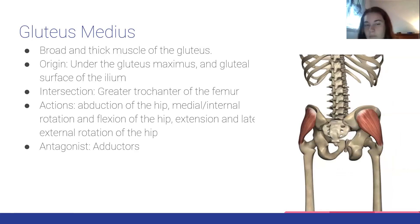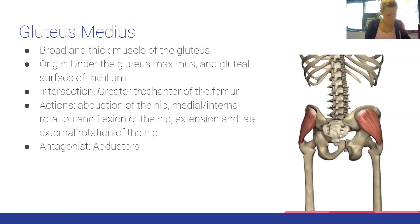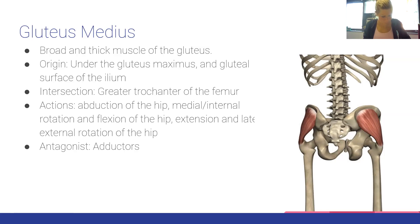The gluteus medius is a broad, thick gluteal muscle. Origin: gluteal surface of the ilium, beneath the gluteus maximus. Insertion: greater trochanter of the femur. Actions: abduction of the hip, medial and internal rotation, flexion, extension, and lateral external rotation of the hip. Antagonist: adductors.